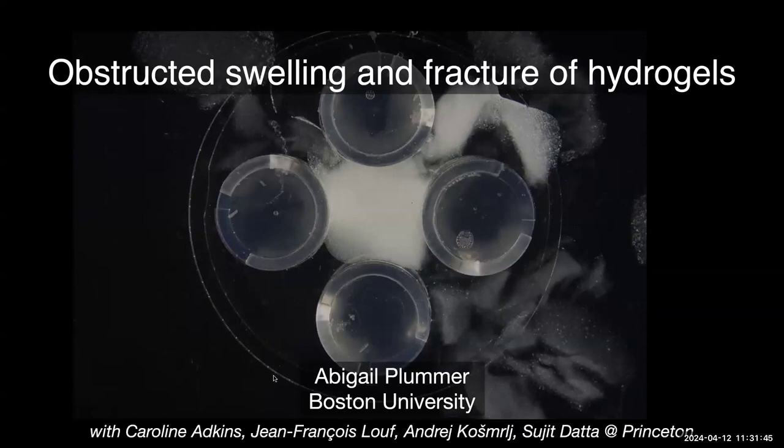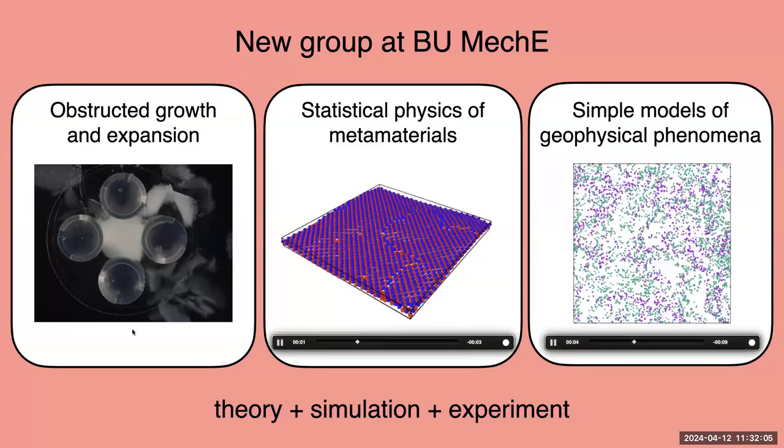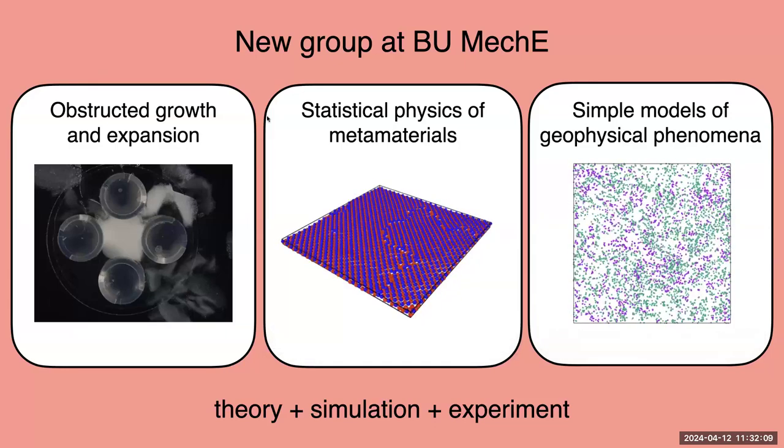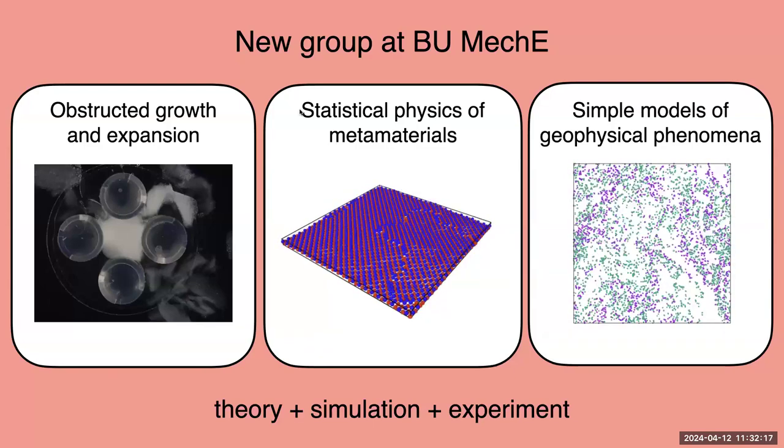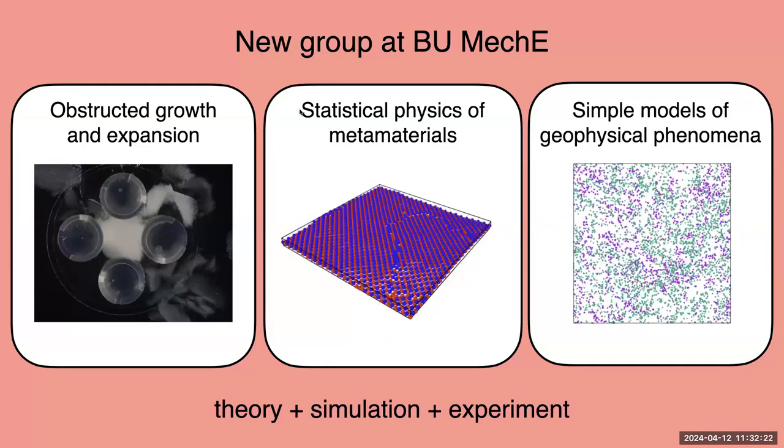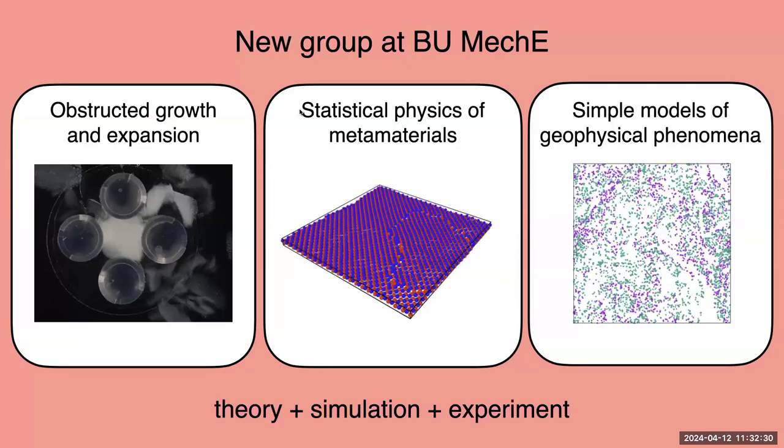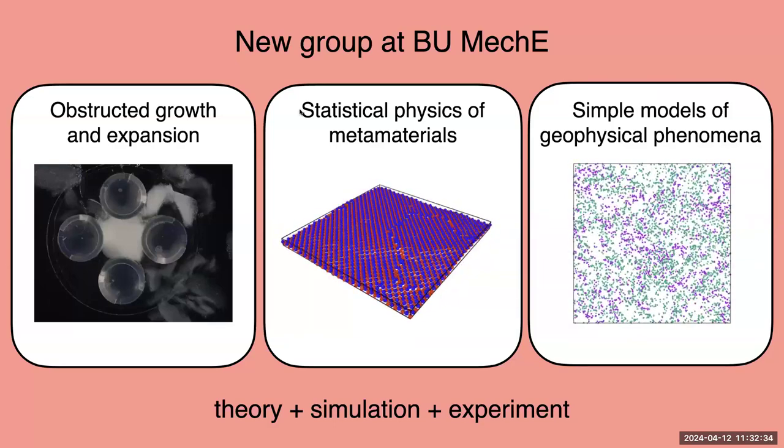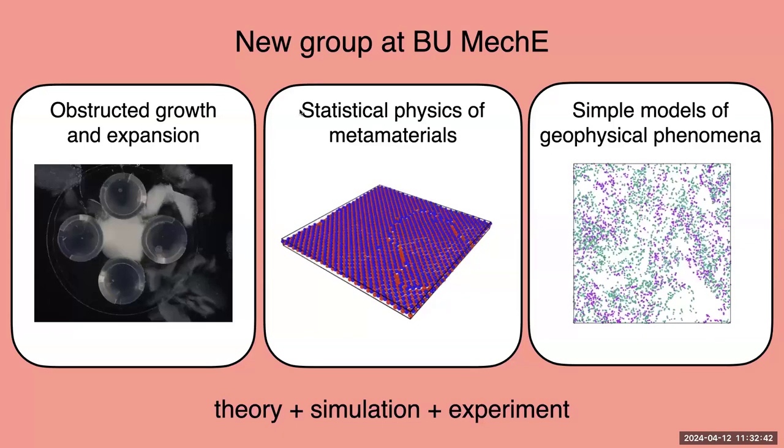This is the cast of characters I did this work with. I want to particularly highlight Caroline Adkins, who was a terrific undergraduate at the time working in Tsuji Data's group, who is now a graduate student at Stanford. Before I get started, I want to say a few words about my group. We will work in three main areas. One of these areas is obstructed growth and expansion, and that's what I'll be telling you about today. We're also really interested in the statistical physics of metamaterials, how we understand metamaterial behavior through the lens of statistical mechanics models. We're also interested in bridging soft matter in the geosciences, and we've worked on projects with oceanographers related to ecological competition and turbulent fluids. These projects have a very broad range, but they're all connected by their use of simple models for complex behavior and our effort to connect theory, simulation and experiment whenever we can.